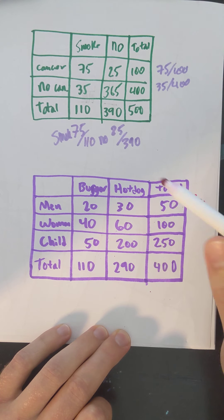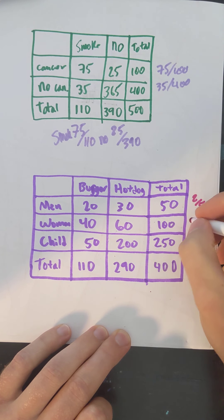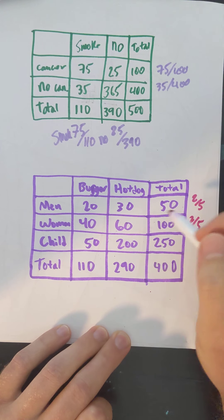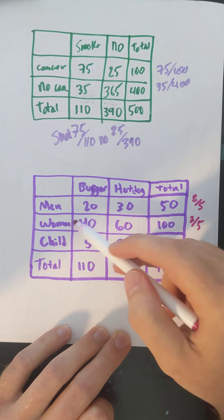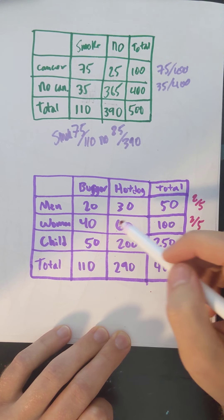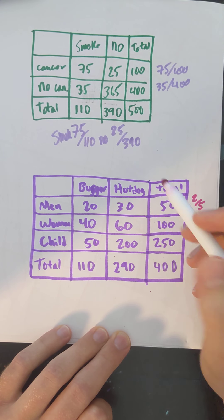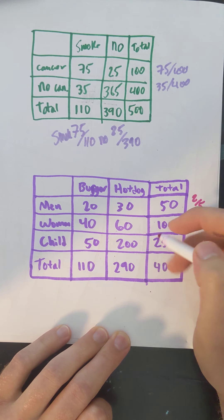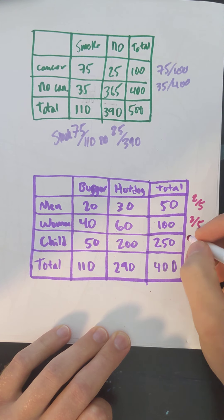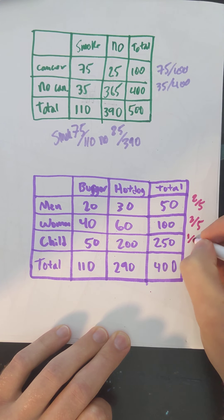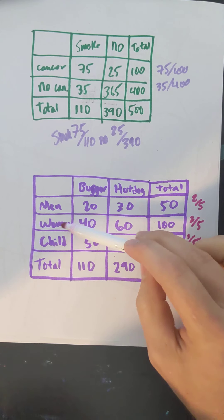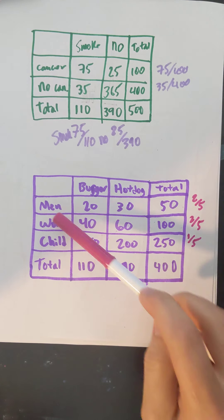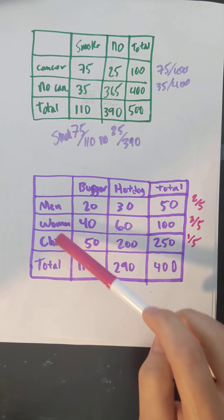For women, burgers are 40 out of 100, which also reduces to two-fifths. So it seems like this is an independent scenario where it doesn't matter if you're a man or a woman — you're equally likely to pick a burger or a hot dog. What about a child? That's 50 out of 250 for a burger, which reduces to one-fifth. So there might not be a difference between men and women, but there is a difference between adults and children.